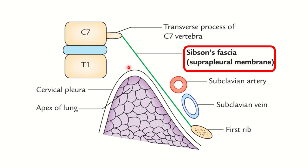In the next picture, we can see the thoracic and cervical vertebrae with the intervertebral disc. This is a cross-section showing the lungs, with different types of alveolar structures. This is the apical area, and we can see a fascia structure lying over the apex of the lungs — from the transverse process of the C7 vertebra to the first rib. This fascia structure is Sibson's fascia, also called the supra pleural membrane.